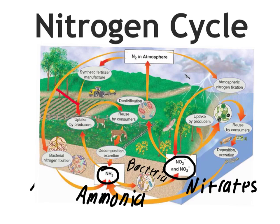As far as this cycle goes, it pertains to all the same rules we discussed with the other ones — you could start at any given point, move through the cycle, and go back to that same point. For example, you could start with nitrogen in the atmosphere, move down to the soil through bacterial nitrogen fixation. That bacteria could then be converted into ammonia, which could then be converted by another bacterial process into nitrates, which could then be taken up by producers, maybe eaten by a consumer. We can go from producers to consumers, back to decomposition, and then maybe that ammonia gets converted into nitrates again, and through bacterial denitrification goes back up to the atmosphere.